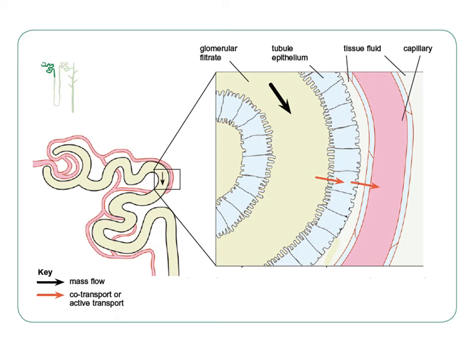On the screen you have a zoomed in view of the proximal convoluted tubule. As you can see, as the glomerular filtrate moves down the proximal convoluted tubule — this is the stuff that's been filtered out during ultrafiltration — some of that stuff that's been filtered out, the useful things, will be reabsorbed in selective reabsorption into the capillaries which surround this part of the nephron.